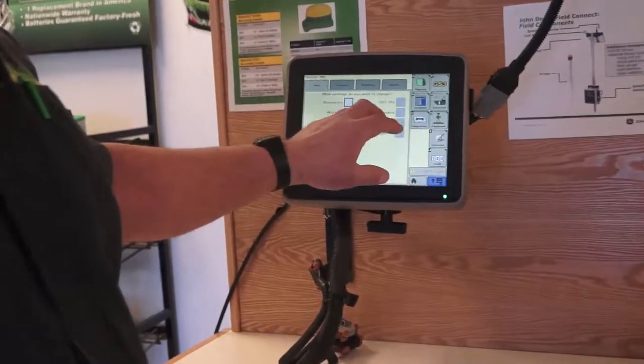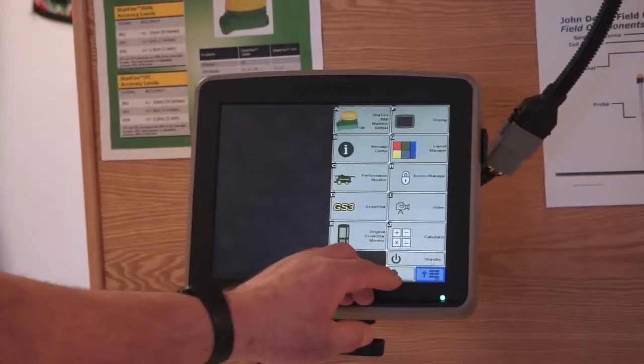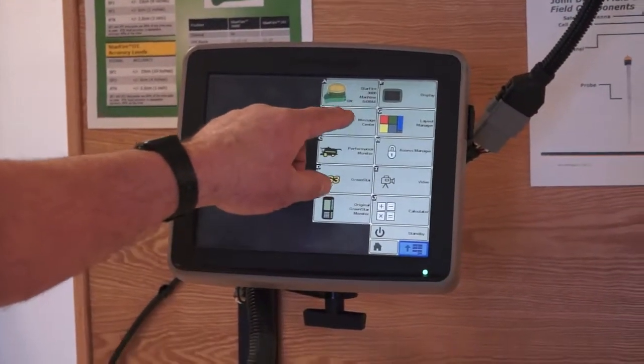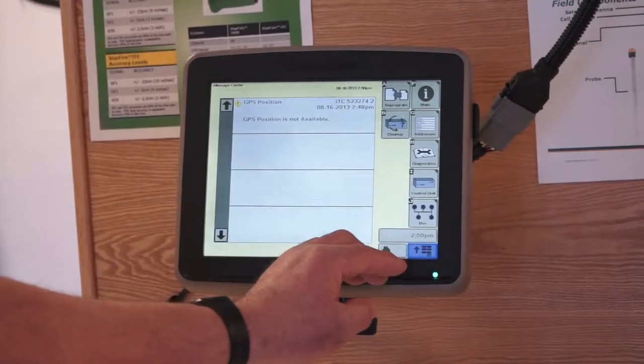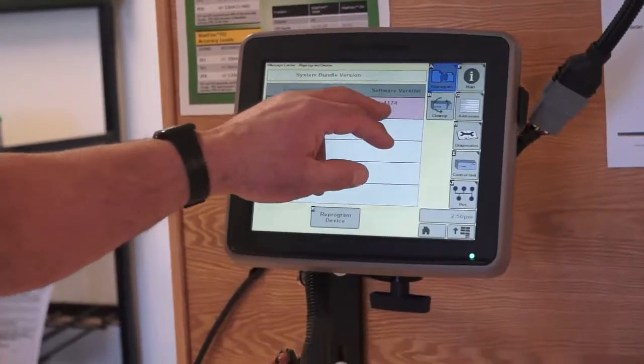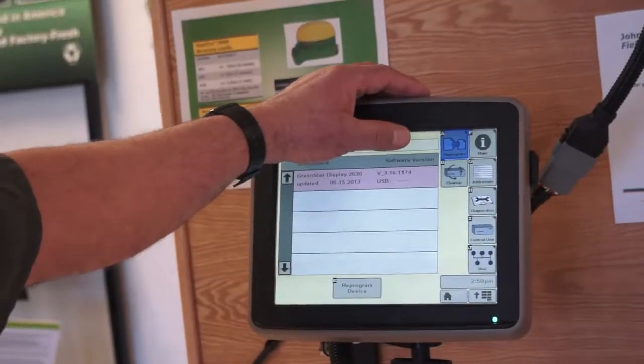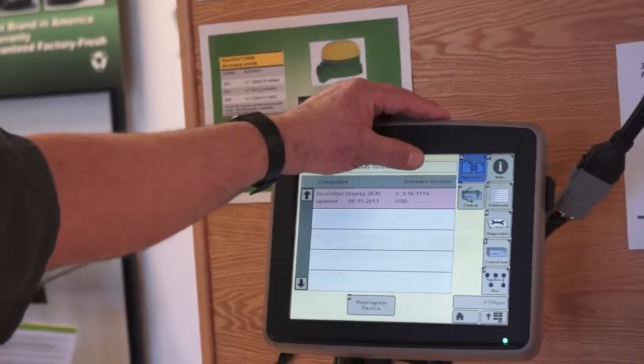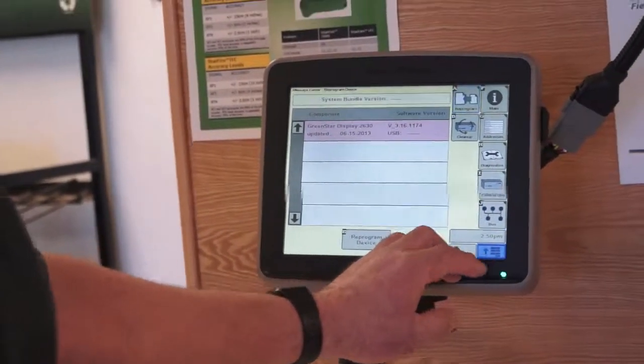GreenStar 3 operation takes into all our GreenStar 3 functions. Menu again, performance monitor, message center, more of a diagnostics section. We can go in through reprogram mode, check our software versions, which is always important. Our software versions change yearly, so it's important to check these. Actually twice a year.